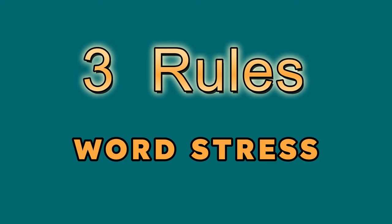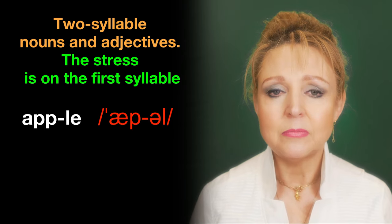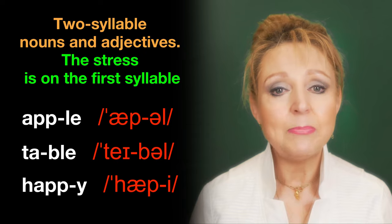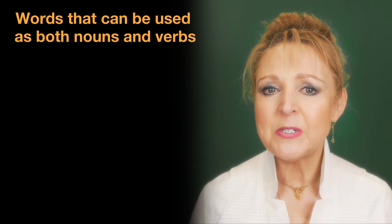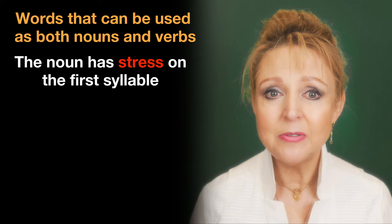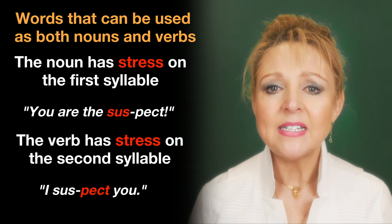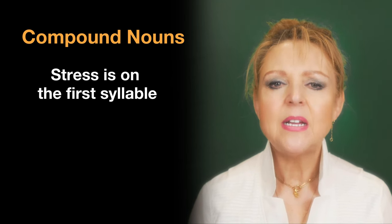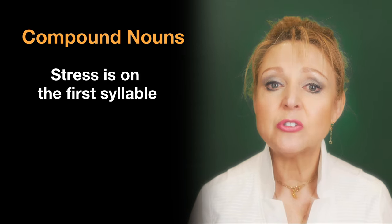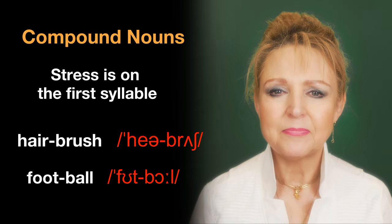Here are three general rules to help you with word stress. Number one: two-syllable nouns and adjectives — the stress is on the first syllable, as in apple, table, happy. Number two: words which can be used as both nouns and verbs — the noun has stress on the first syllable, the verb has stress on the second syllable, as in 'I suspect you'. Number three: compound nouns — the stress is fairly equally balanced but with stronger stress on the first part, as in hairbrush, football.